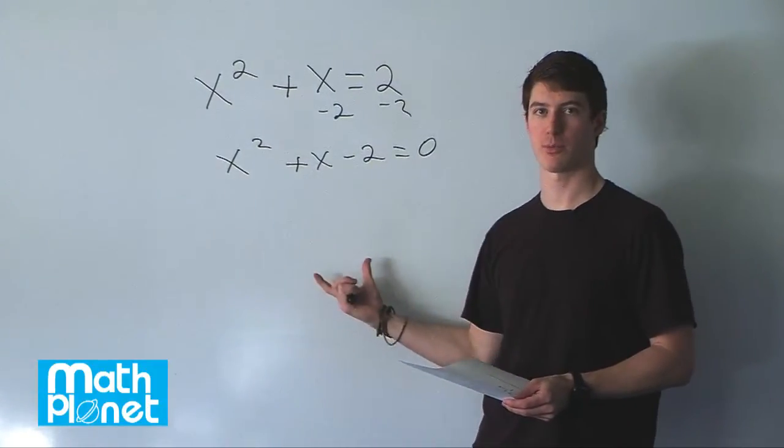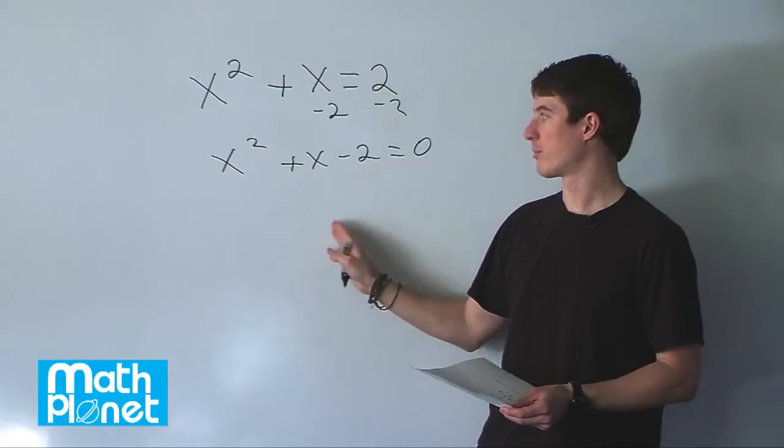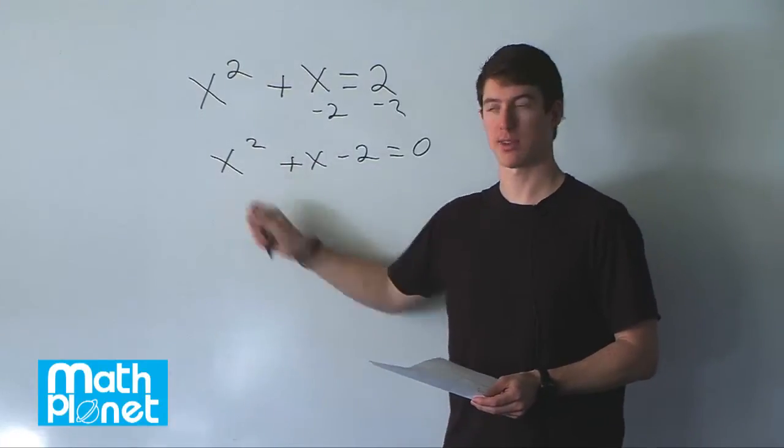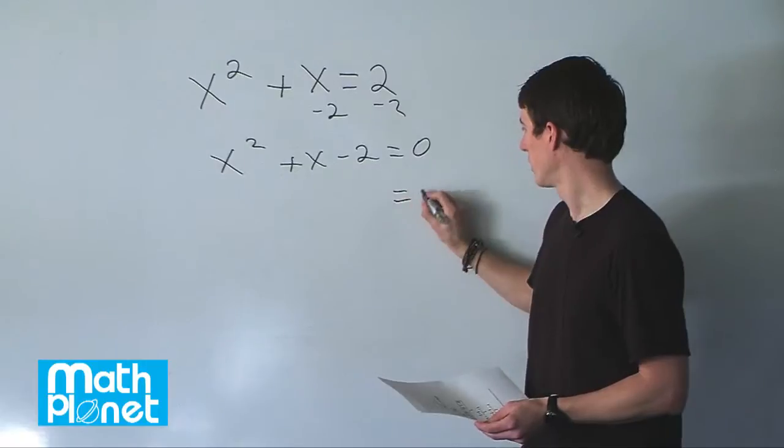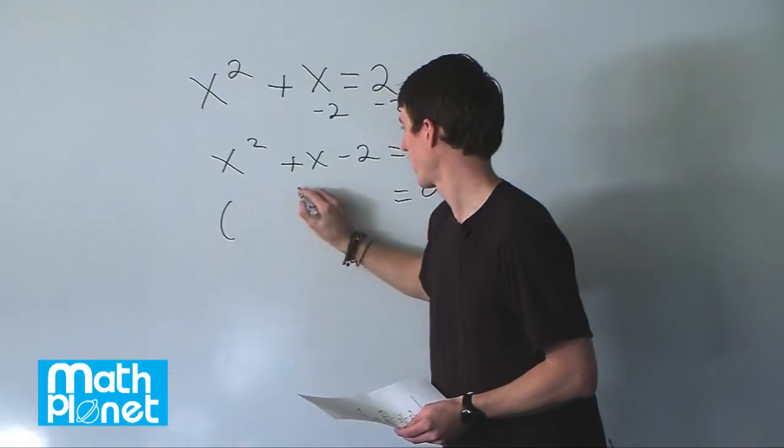We're going to have two quantities multiplied by each other that when multiplied back out or expanded would give us this here.